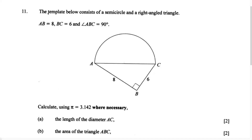This question says the template below consists of a semi-circle and a right-angled triangle. They tell us AB equals 8, BC equals 6, and angle ABC equals 90 degrees. So we have this figure, which is made up of a semi-circle and a right-angled triangle.